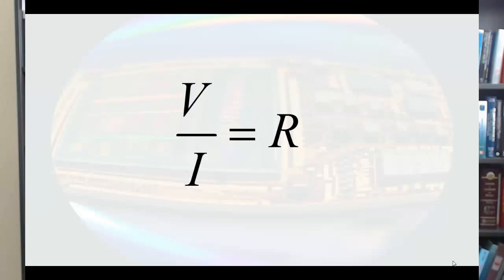That is, the ratio of voltage to current was equal to some fixed quantity. This is the quantity we call resistance.